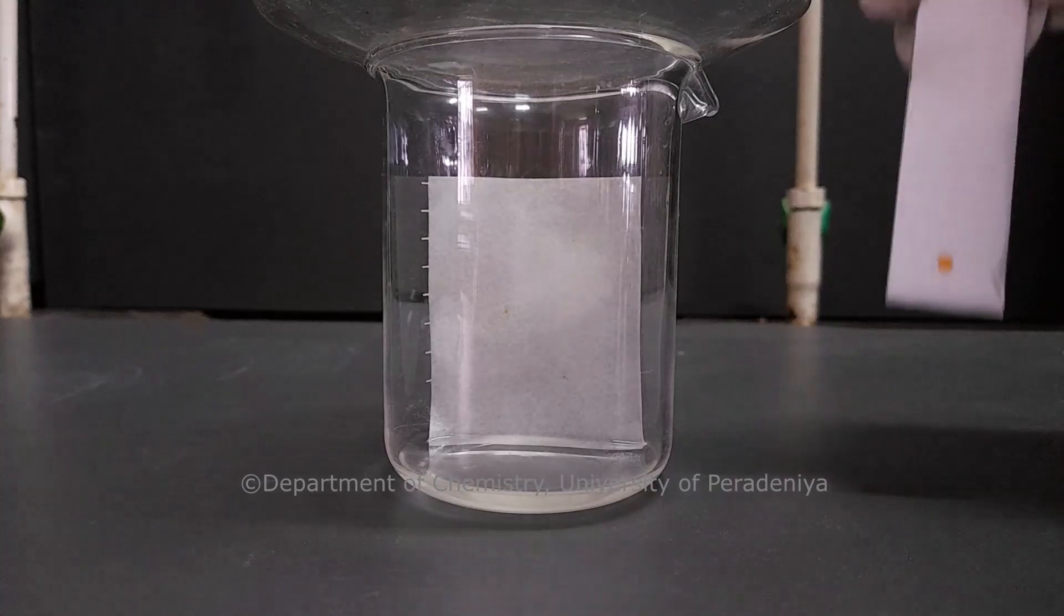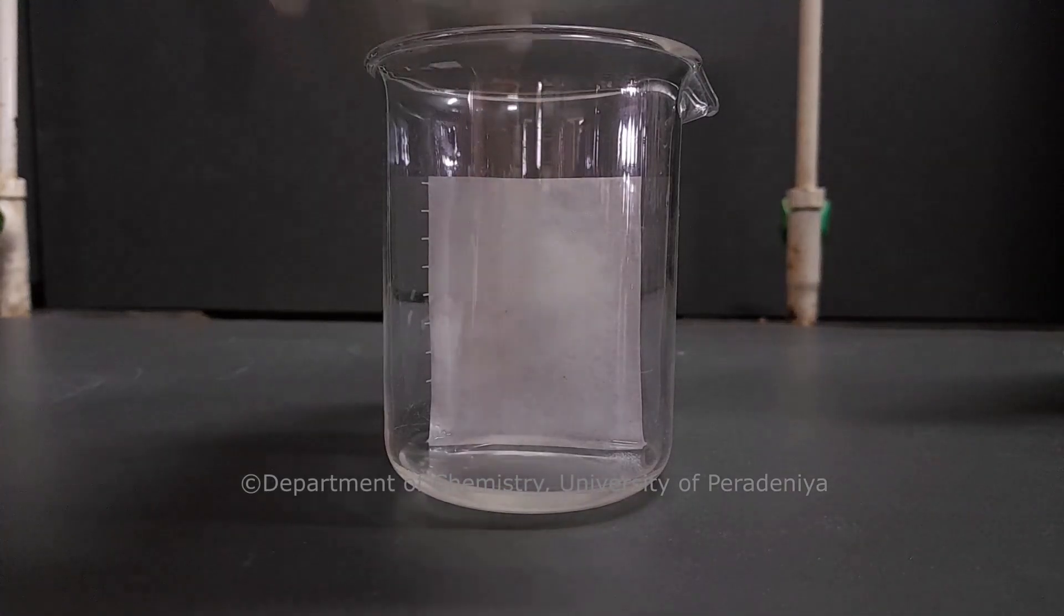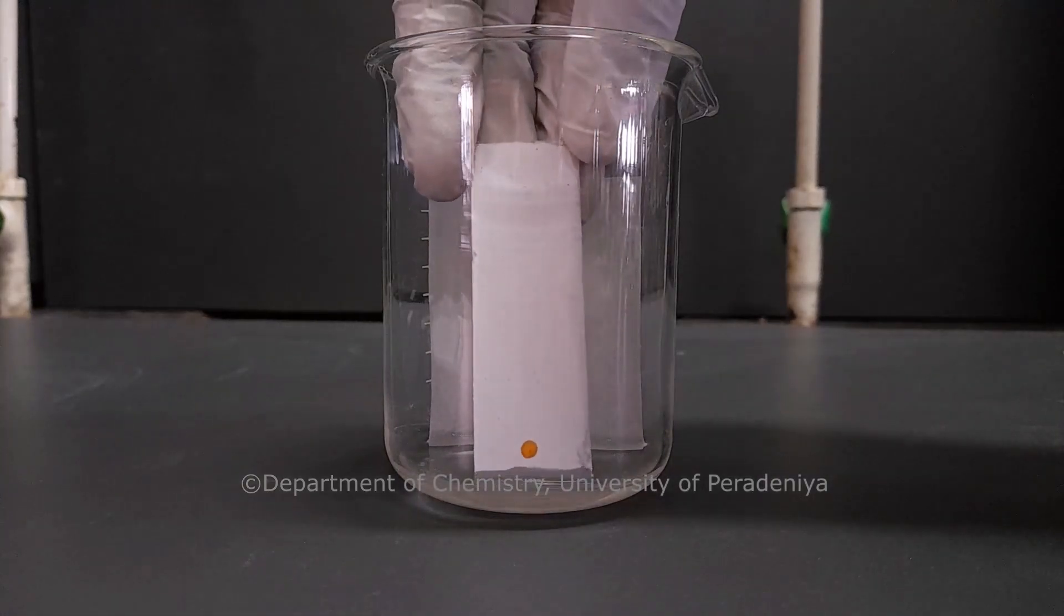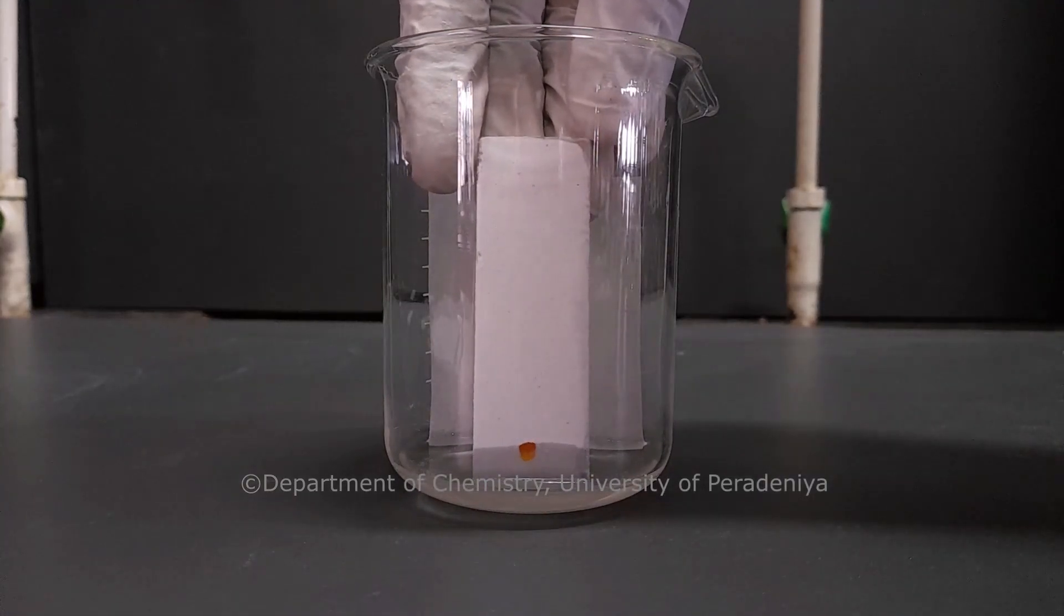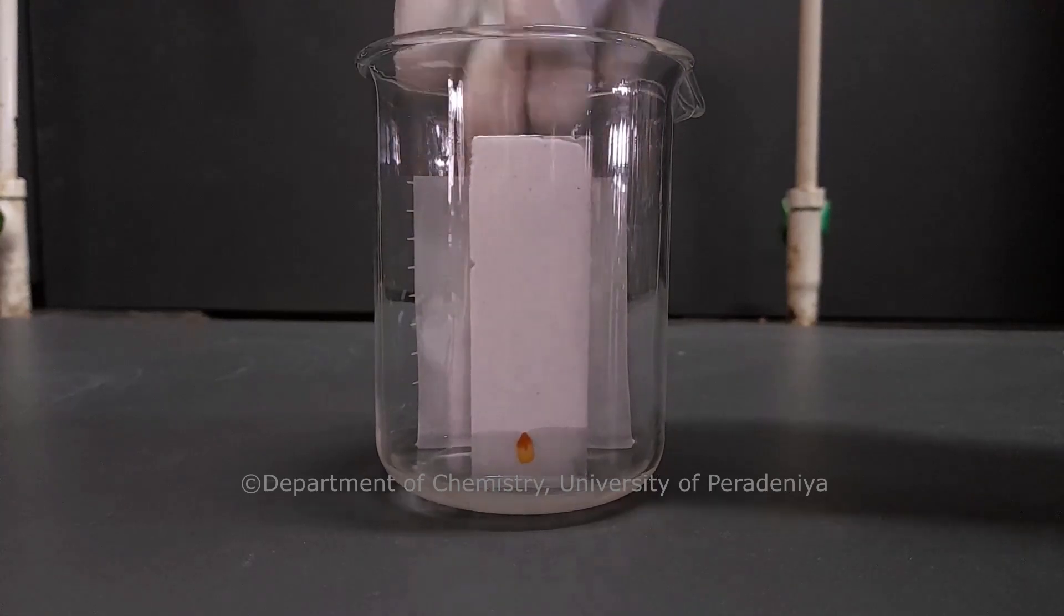Then the plate is kept inside the chamber. Make sure the solvent is there and the solvent height is lower than the baseline of the TLC plate. Otherwise, the compounds will dissolve in the pool of solvent instead of traveling up the plate.